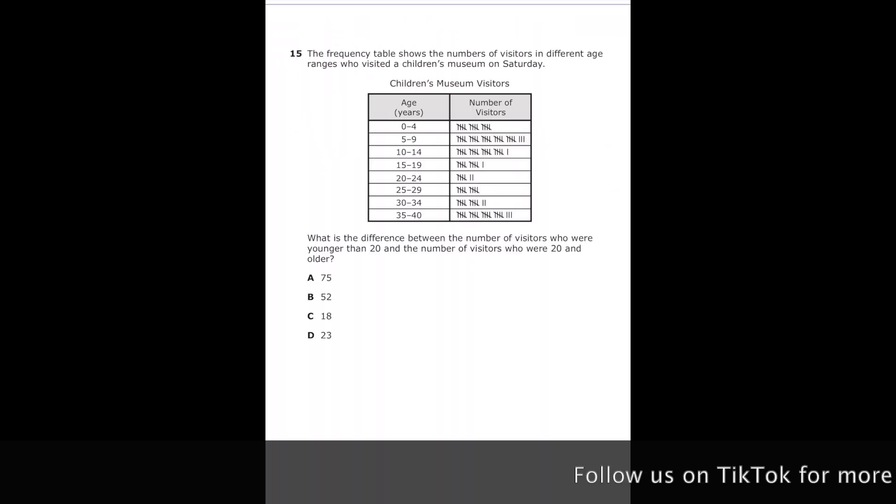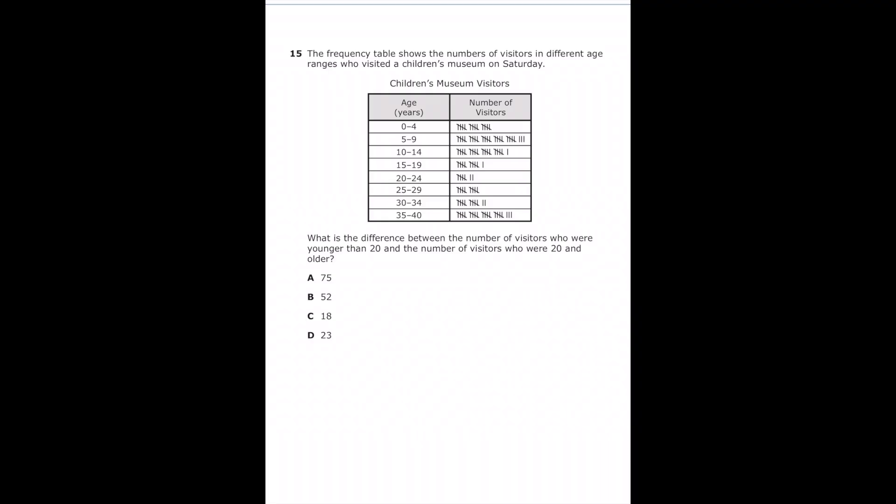Number 15, the frequency table shows the number of visitors in different age ranges who visited a children's museum on Saturday. What is the difference between the number of visitors who are younger than 20 and the number of visitors who are 20 and older?